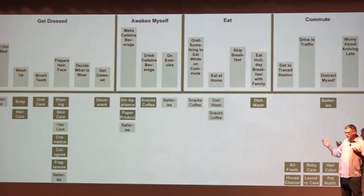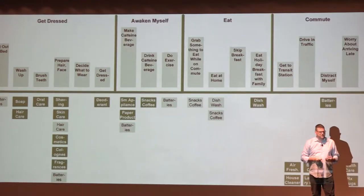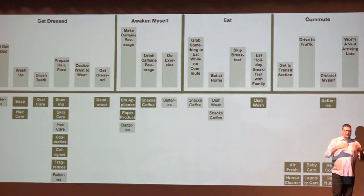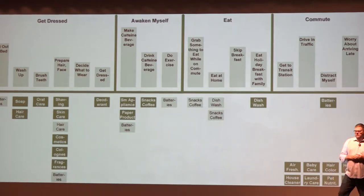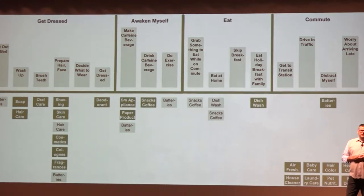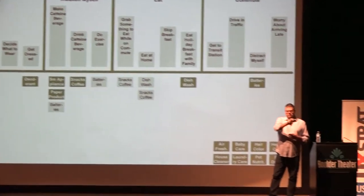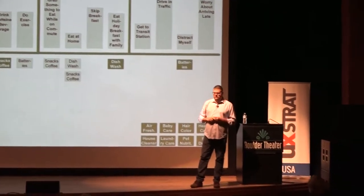You can go out in the world and do observations and contextual inquiries and build up this model of the tasks and activities that your users or customers are undertaking. Then you can inventory all of your touch points, count them all up, and start to map — yes, this touch point is in place because it satisfies this task for the user.